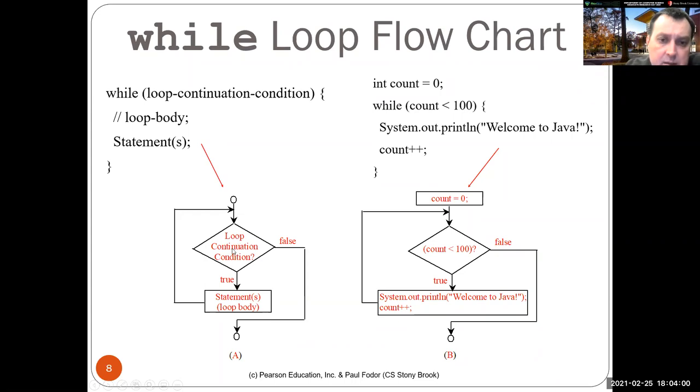So in this example, you can see that if the loop is true, it executes and then comes back to check the condition. If it's false, it continues with the rest of the statements after.